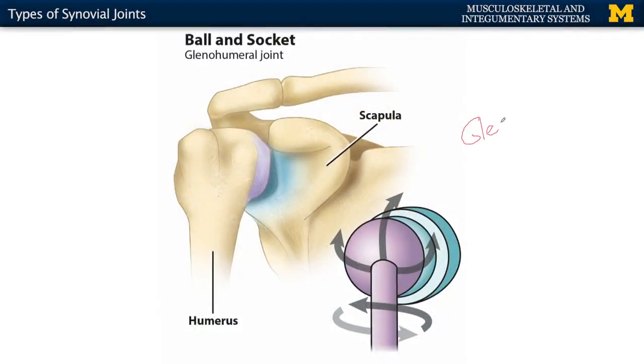We'll start with ball and socket joints. We have a good idea — we can visualize what a ball and socket joint would be. The best example and the most freely movable joint here is your shoulder joint. The actual name for your shoulder joint is your glenohumeral joint. You're going to have your ball on the humerus and your socket on the scapula. What's key here is how well these actually articulate with one another. You have this fairly shallow socket and the fairly bulbous head of the humerus, which means you don't have a very good fit between these two bones, so this will allow for more movement in this region.